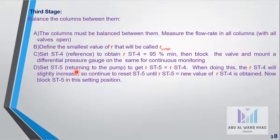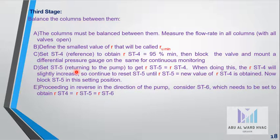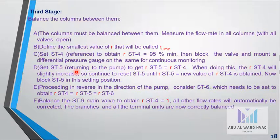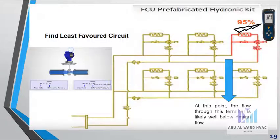Block ST5 in this setting position. Then proceeding in reverse in the direction of the pump, consider ST6 which needs to be set to obtain R_ST4 = R_ST5 = R_ST6. Balance the ST9 main valve to obtain R_ST4 = 1. All other flow rates will automatically be corrected. The branches and all the terminal units are now correctly balanced.